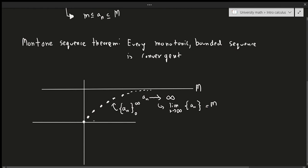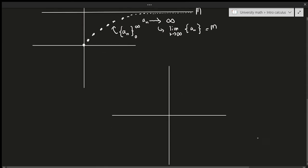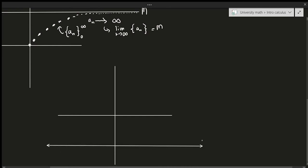That makes sense — if it starts at some value, is always increasing, and is bounded, it's going to approach M at infinity. The same applies going downward: if the sequence is bounded below by little m and is decreasing, then the limit as n approaches infinity of the sequence equals little m.